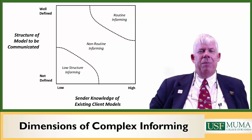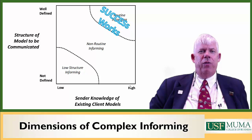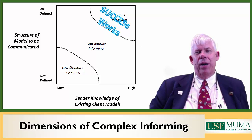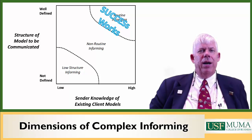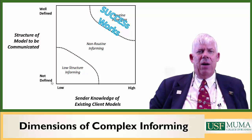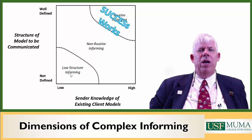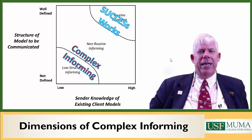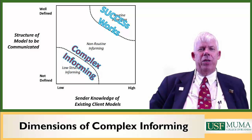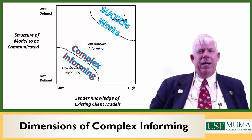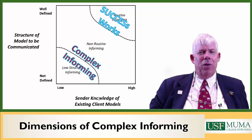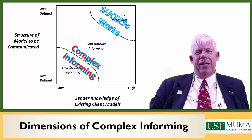With this model in mind, when we talk about routine informing — where you have high knowledge of the client models and a well-defined model to communicate — Chip and Dan Heath's success framework is probably going to be pretty effective. When we get to low structure and low knowledge of the client model, we're in complex informing. In that region, there needs to be tremendous interaction between the client and informer. Very often the client will need to talk more than the informer, because understanding where the client starts from is more important than immediately communicating the model.